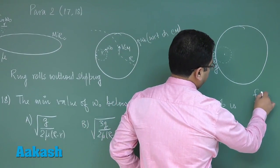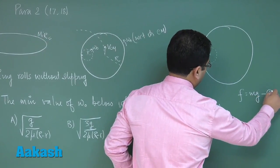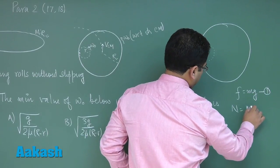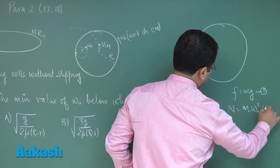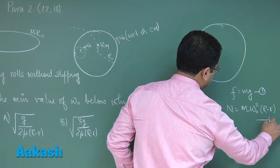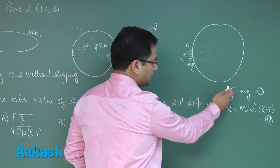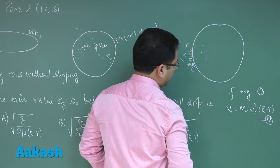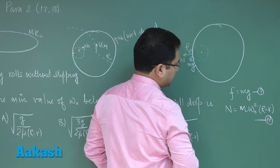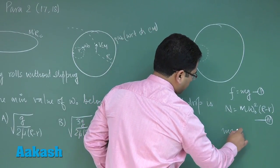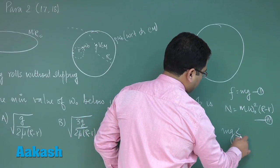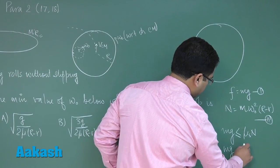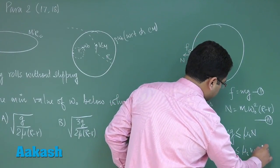Here, F is equal to mg - that is equation number one. And normal reaction would be M omega naught squared (r minus small r) - that is equation number two. From these two particular equations, you know F would always be less than equal to mu s times n for no slipping. So mg would be less than equal to mu s times n, and that mg would be less than equal to mu s times m omega naught squared (r minus small r).